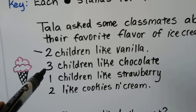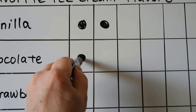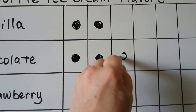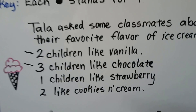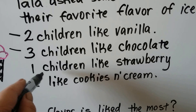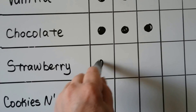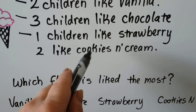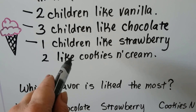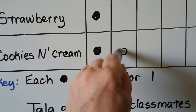Three children like chocolate, so we need three for chocolate. One, two, three. One child likes strawberry, so strawberry gets one dot. And the last one says two like cookies and cream, so that's two for cookies and cream. One, two.